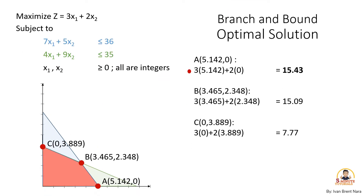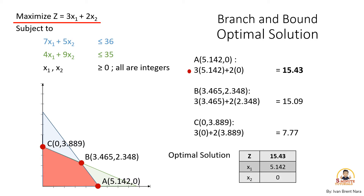We ended our first lesson where we identified the optimal solution of the problem, which is at point A: x1 equals 5.142 and x2 equals 0. After plugging the values of x1 and x2 into our objective function, we generate a z value of 15.43. But based on our third constraint, all decision variables must be non-negative integers, and our x1 is not an integer value but a decimal.